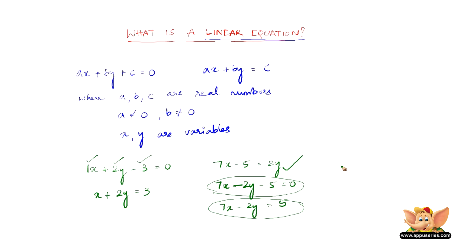And let us see another example, say root 2x minus root 3y minus 9 equal to 0. Yes, this is a linear equation because root 2, root 3, and 9 are real numbers. X and y are variables and of course...